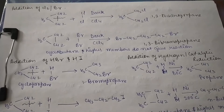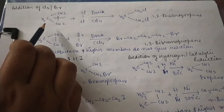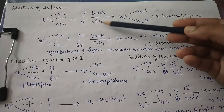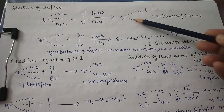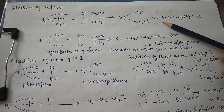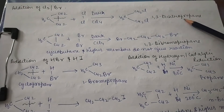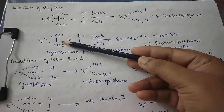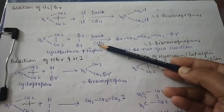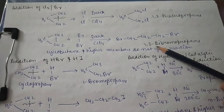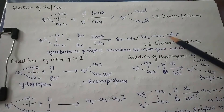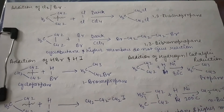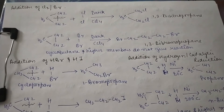Let's see the addition of chlorine and bromine. Cyclopropane reacts with chlorine in the presence of carbon tetrachloride to form 1,3-dichloropropane — the ring opens. Cyclopropane also reacts with bromine in dark CCl4 to form 1,3-dibromopropane. This is a ring-opening reaction. Cyclobutane and higher members do not give this reaction.